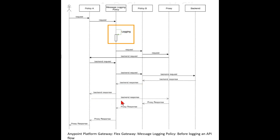Policy A is connected to proxy via backend response, and proxy is connected to policy B via proxy response, and policy B is connected to message logging policy via proxy response, and message logging policy is connected to policy A via proxy response, and policy A is connected to the actor via proxy response.